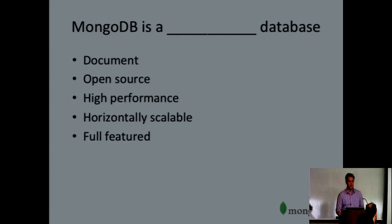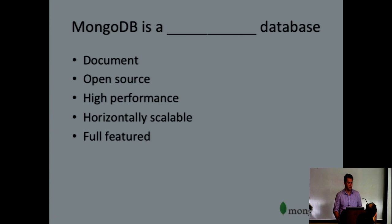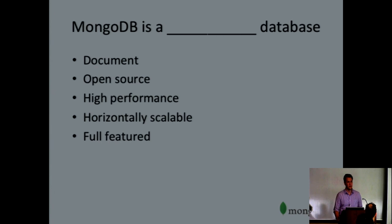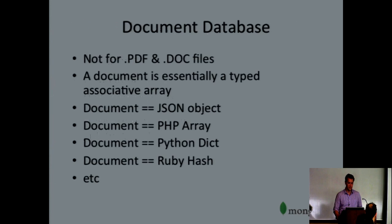So let's talk about what MongoDB is. At a very high level, these are the pitch points people use when they discuss it. It's a document database, as opposed to a traditional row-oriented database. It's open source. It's high performance. It's horizontally scalable — one of the unique selling points of the database. And it's full-featured. We'll get into what those features are soon.